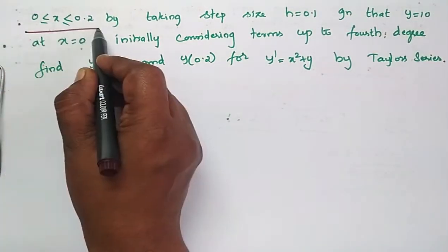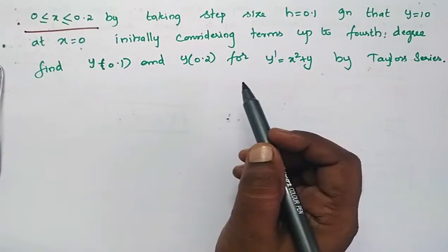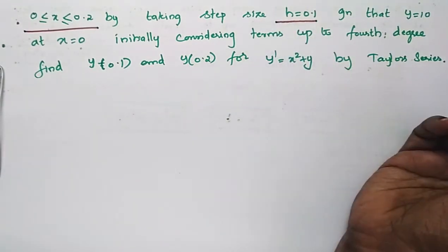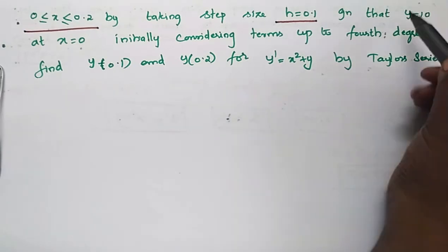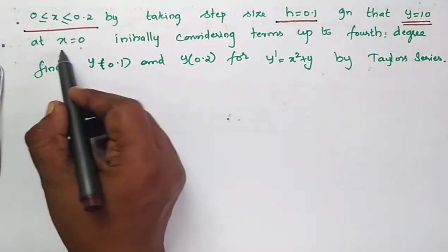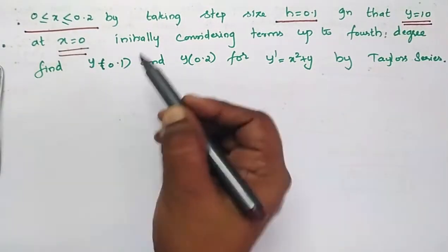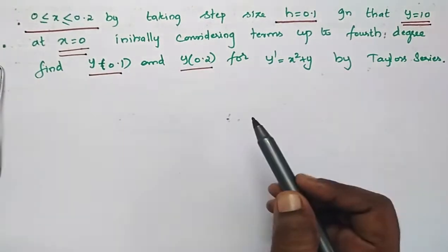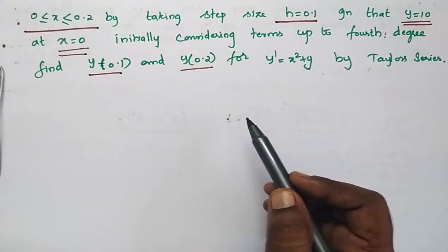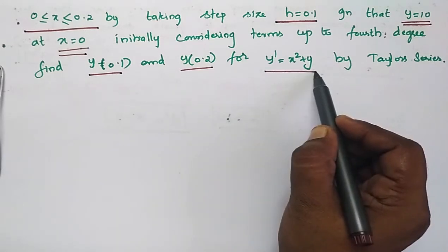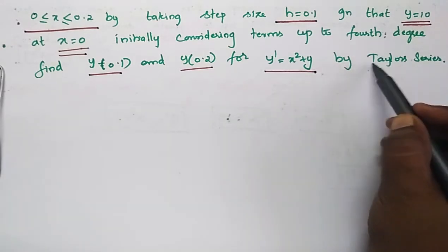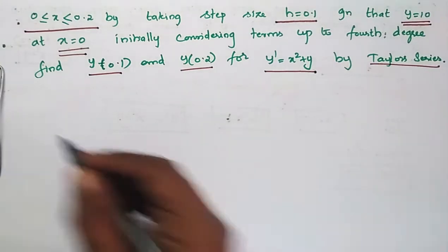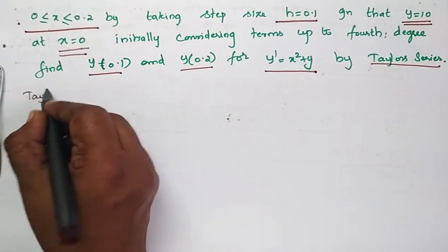x lies between 0 and 0.2, taking step size h equal to 0.1. Given y is 10 and x is 0, find y(0.1) and y(0.2) where y' = x² + y using Taylor series.